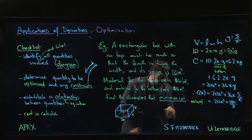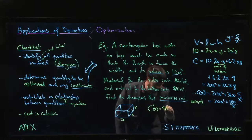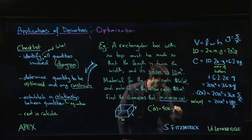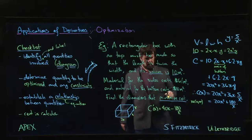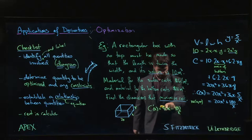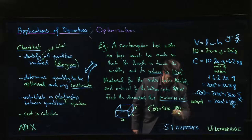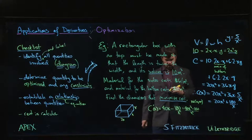Let's see: C prime is going to be 40x minus 180 over x squared. Derivative of 1 over x is minus 1 over x squared. And we want to have a common denominator here, so we're going to multiply this one top and bottom by x squared. So we have 40x cubed minus 180 over x squared.